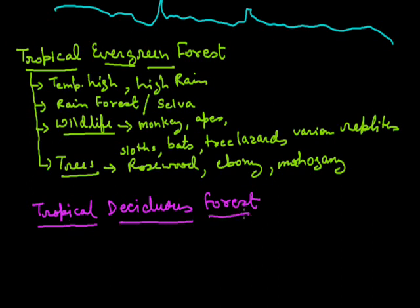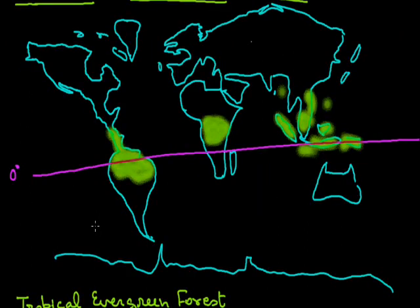Tropical deciduous forest. Again by name, tropical means temperature is high. On the other hand, deciduous means those trees which shed their leaves once a year, meaning low or we can say average rainfall area.